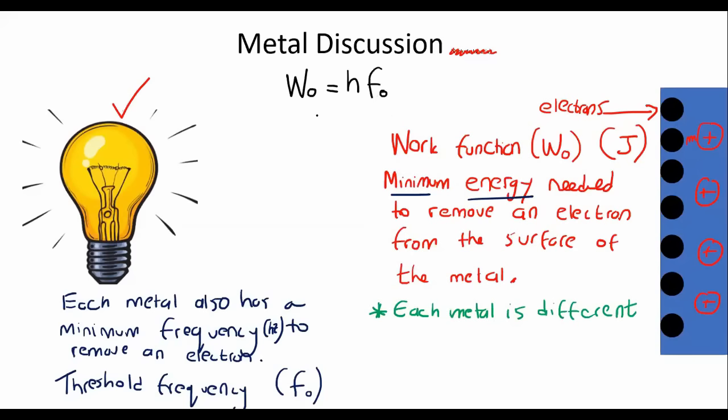So this here, W₀, once again, is the work function measured in joules. h, once again, is Planck's constant. And then f₀ is threshold frequency.